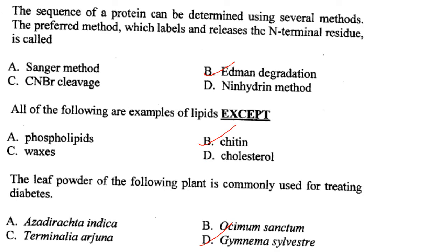The preferred method which labels and releases the N-terminal residue to determine protein sequence is called Edman degradation. Answer is option B.